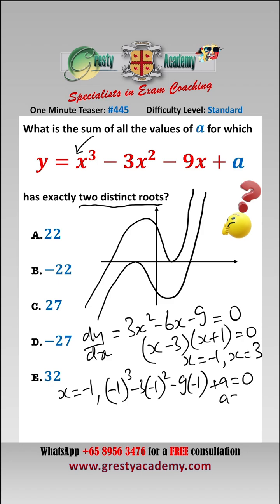Add a equals 0, and that gives us a is minus 5. Putting in x equals 3, we have 3 cubed minus 3 times 3 squared minus 9 times 3, add a equals 0.